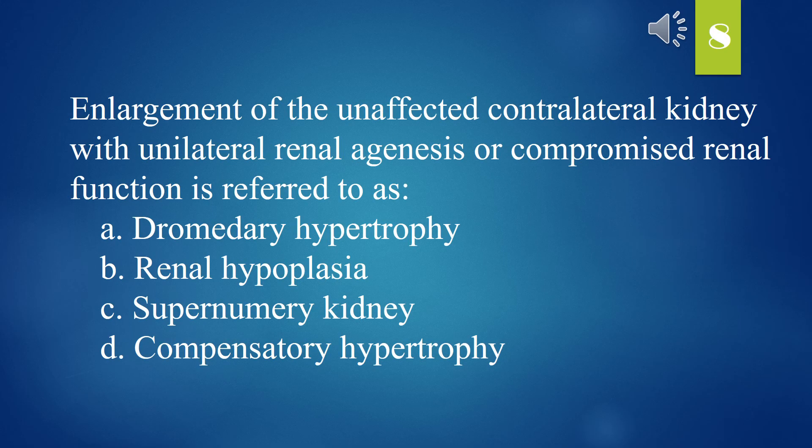Enlargement of the unaffected contralateral kidney with unilateral renal agenesis or compromised renal function is referred to as: A. Dromedary hypertrophy. B. Renal hypoplasia. C. Supernumerary kidney. D. Compensatory hypertrophy. The answer is D. Compensatory hypertrophy.